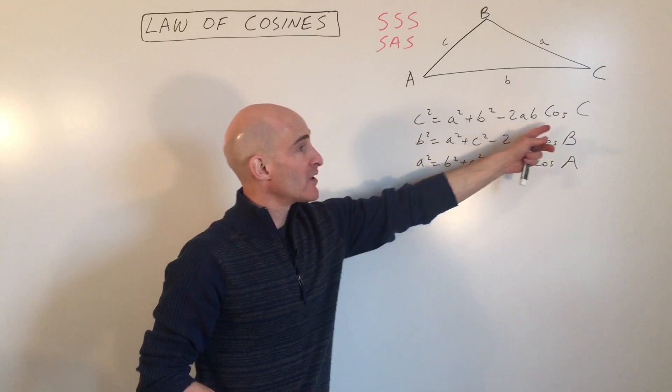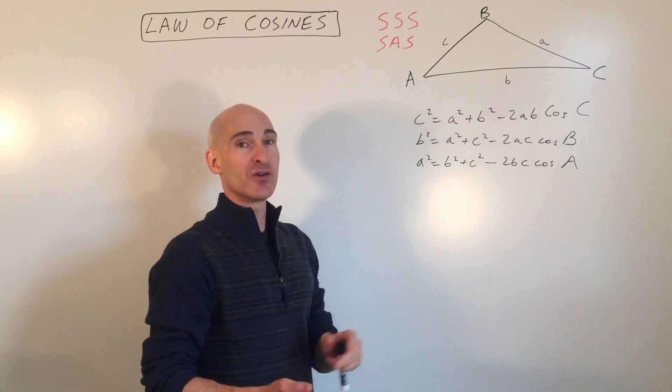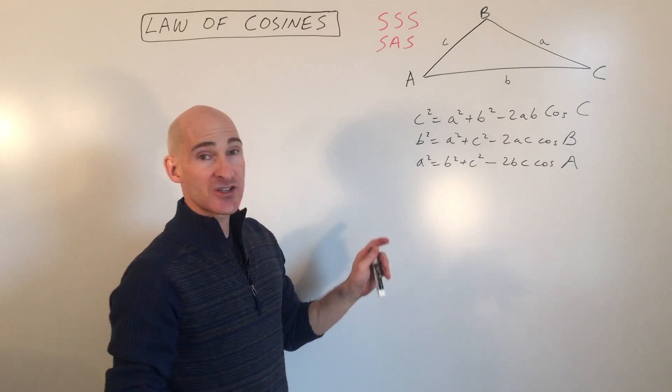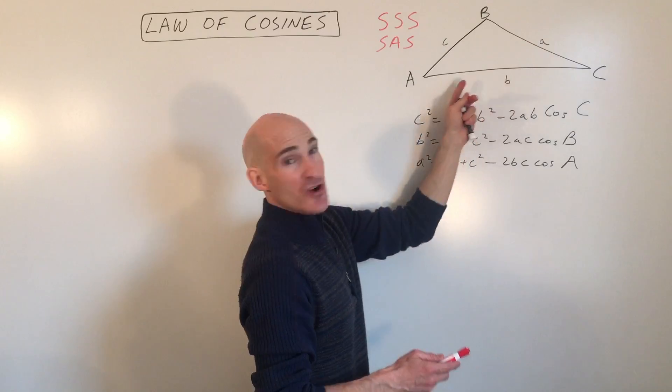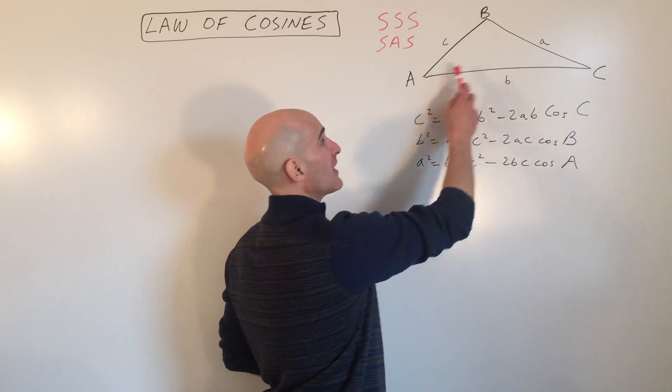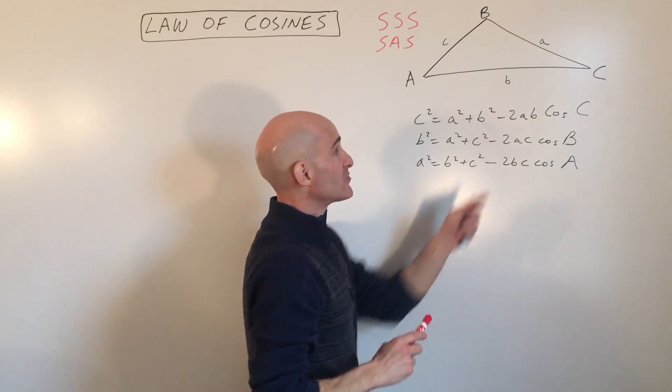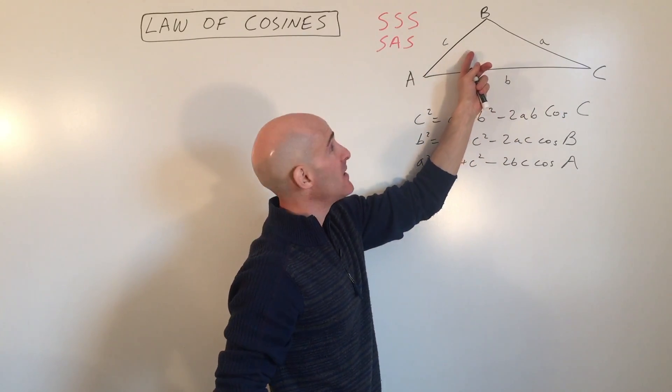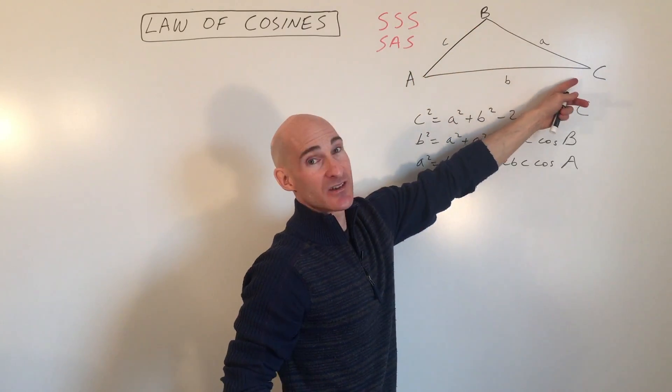So here are the formulas, and you can see there's three of them that you can use depending on what angles and what sides that they give you. But I want you to kind of see the pattern. Notice that in this generic triangle here that angle A and side A are across from each other, angle B and side B are across from each other, angle C and side C. The lowercase letters are the sides, and the capital letters are the angles.